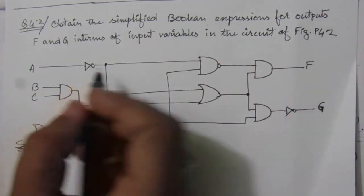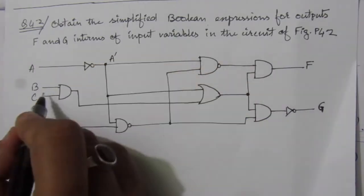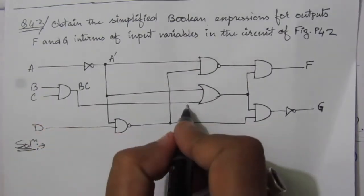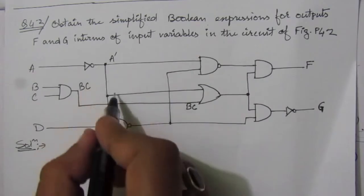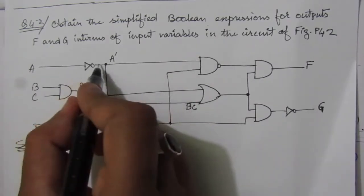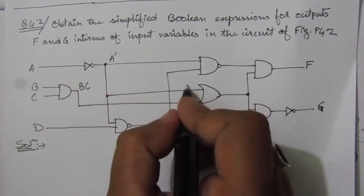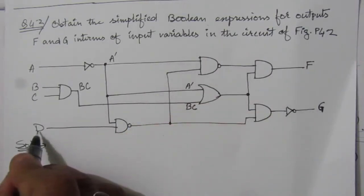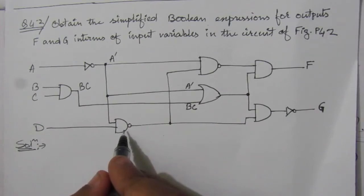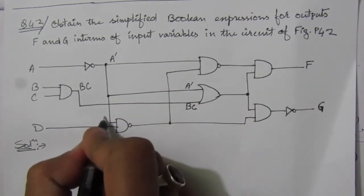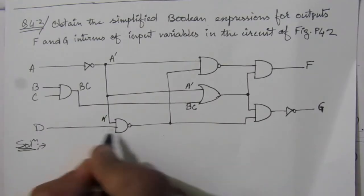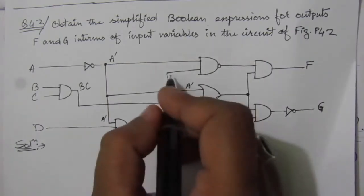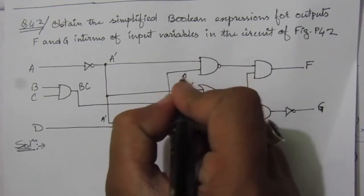After the inverter we get A-bar. At the AND gate with inputs B and C, we get B·C on that line. Similarly, A-bar is the input to the next gate. D is also an input, so at the NAND gate we get (A-bar · D)-bar. This (A-bar · D)-bar is then applied to the next gate along with A-bar.